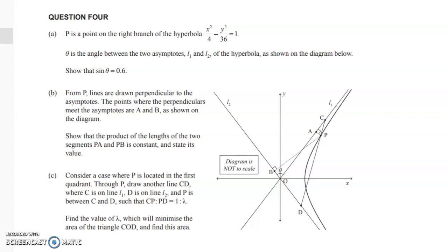In part C we're told that P is in the first quadrant, so we've got any point here P and we're going to draw a line through that. That line is going to meet both of the asymptotes. P is somewhere on that line and we've got this horrible looking ratio thing: CP to PD is 1 to lambda. You can think of that as this distance here is 1 and this distance down here is lambda. We have to find the value of lambda - this question just gets worse and worse - which will minimize the area of the triangle COD.